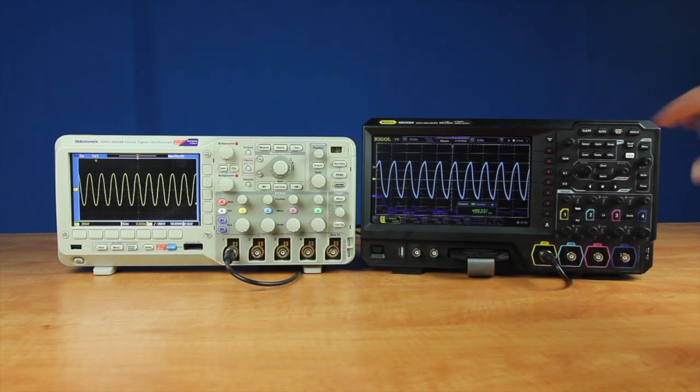We've already turned on the color grading display, the frequency counter, and the FFT. And we're still running right at about 500,000 waveforms per second. A hundred times more than Tektronix.